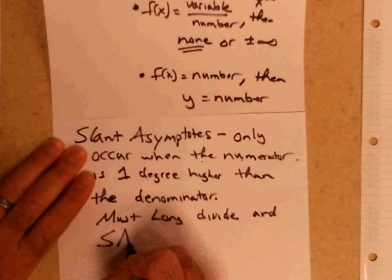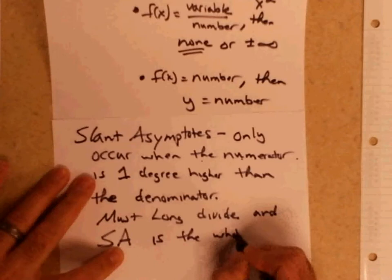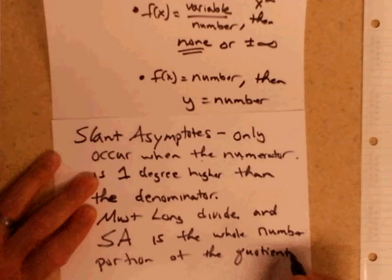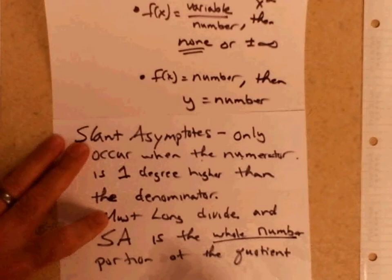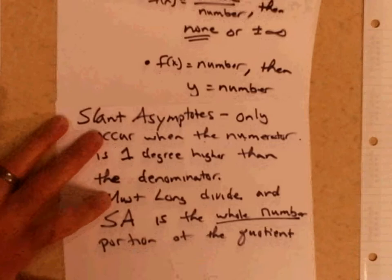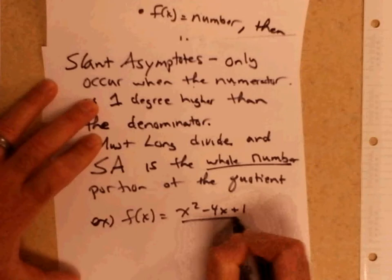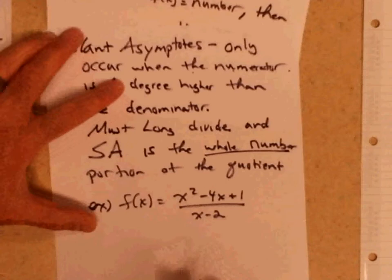We'll do an example. The slant asymptote is the whole number portion of the quotient. If there's a remainder, you can just disregard the remainder — we don't need it for the slant asymptote. So for example, this function does have a slant asymptote: f(x) equals x squared minus 4x plus 1 divided by x minus 2.